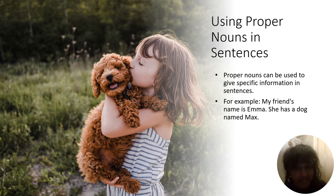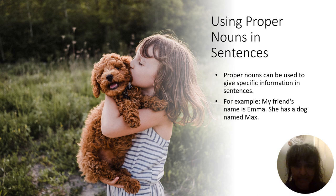We could say it a different way: 'I have a friend. She has a dog.' But when you give us the name of the friend and the dog, now we're giving you proper nouns.